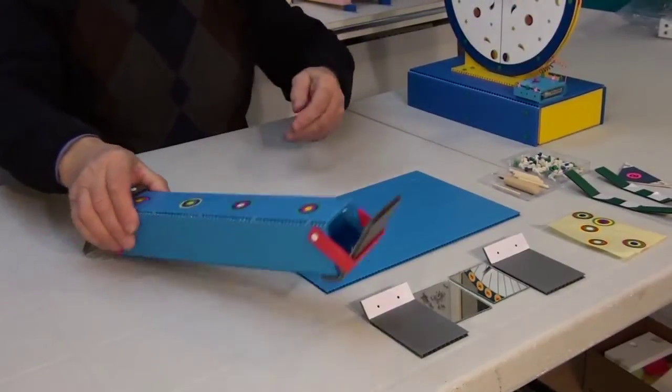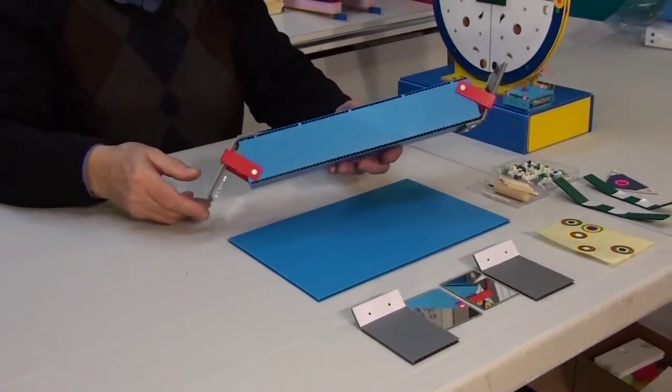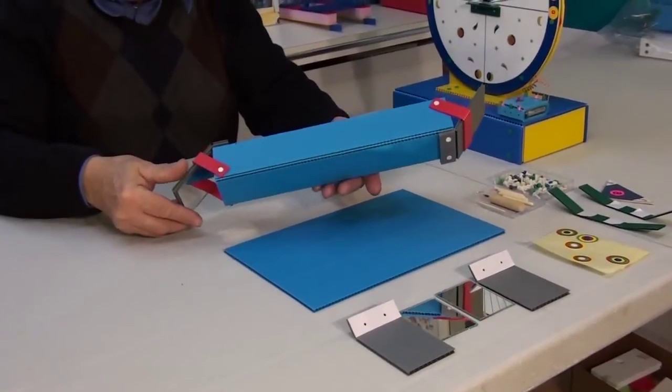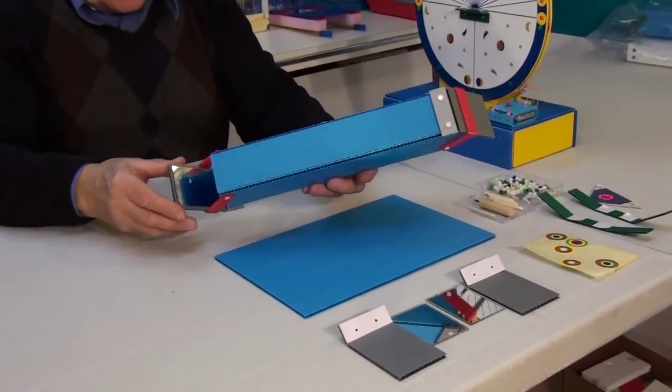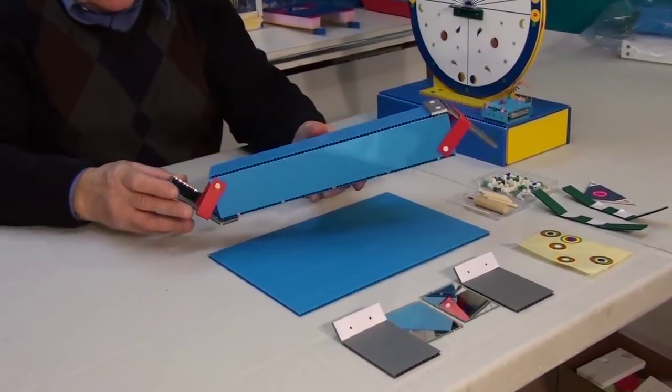Today we are making a periscope. A periscope is an optical device that allows observing objects from a hideout, for example a submarine or a military tank.